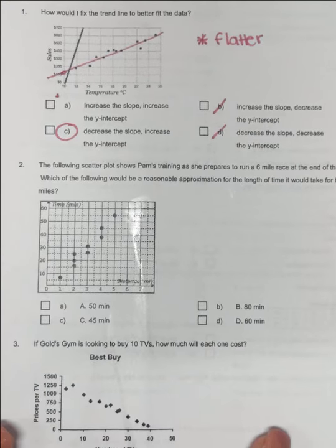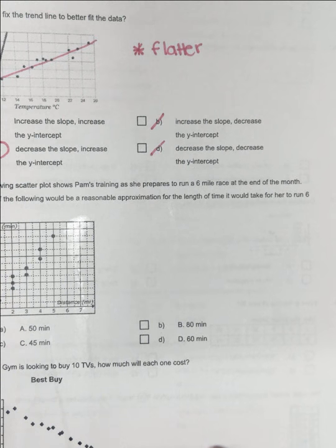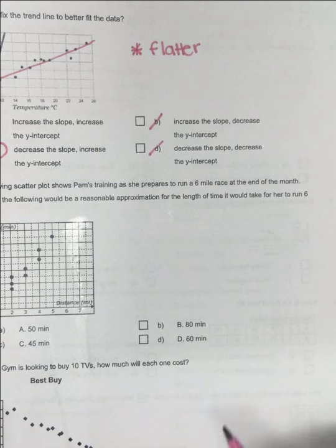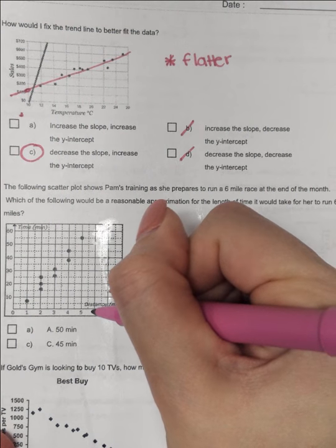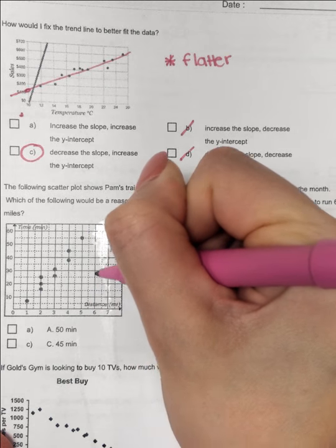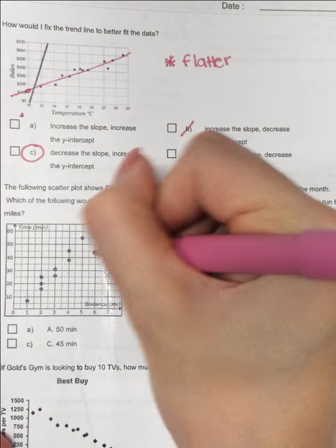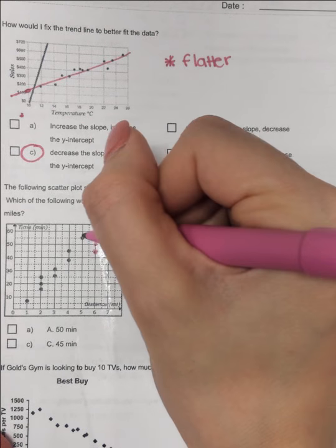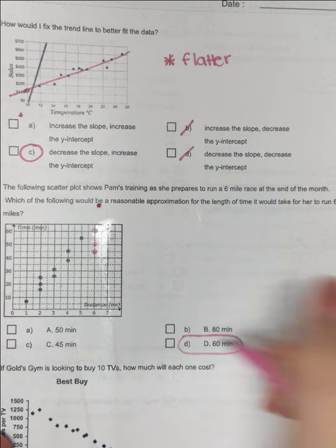And then the slope, it is less slanted or flatter, which means you decrease the slope. Moving on to number two. The following scatterplot shows Pam's training as she prepares to run a seven-mile race at the end of the month. Which of the following would be a reasonable approximation of the length of time it would take for her to run six miles? So I'm going to graph each of these or plot each of these points and see which one is the most reasonable. So after six miles right here, 50 would be right here. That seems a little low. 45, that's even lower. 80, that's way off the graph up here. 60 is right there in the middle. So that is going to be the most reasonable.